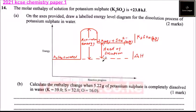So that is how you make your diagram. And you will be able to get two marks. Part B, we have calculated the enthalpy change when 5.22 grams of potassium sulfate is completely dissolved in water. So we have potassium, we have that 9.0. We have sulfur, we have that 2.0. And we have oxygen.